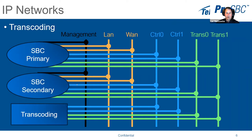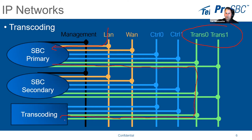For transcoding, you can use just one primary SBC or a primary and secondary SBC. You need only one transcoding device on a 1+1 system. All other interfaces remain the same — management, LAN 1, control 0, control 1 — but you add two interfaces called Trans 0 and Trans 1. When transcoding is needed, traffic comes into the primary SBC, takes the transcoding path to the transcoding device, gets transcoded, and is sent back to the SBC to go out on the WAN interface.